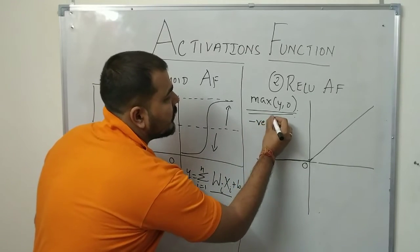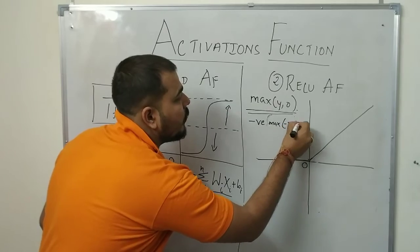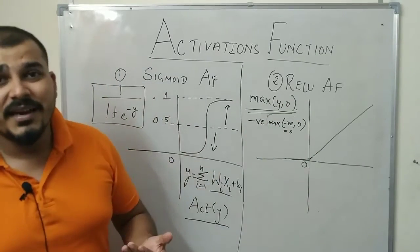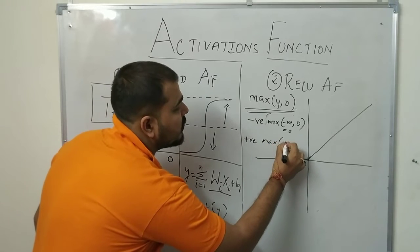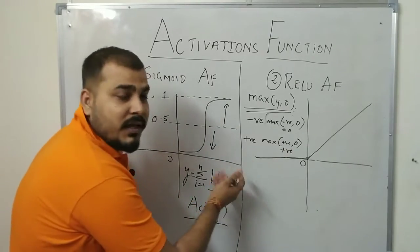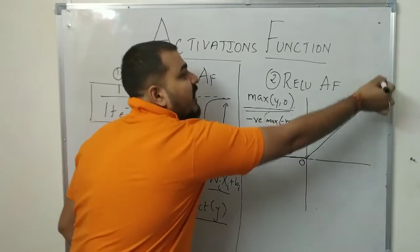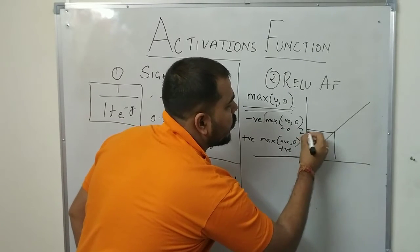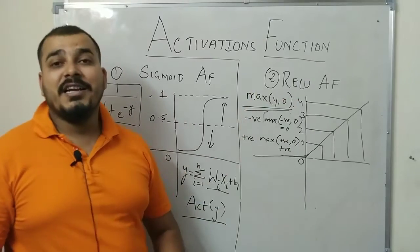Suppose if y is negative, the formula becomes max of negative comma 0. The output will always be 0 because max of a negative number and 0 is 0 — 0 is greater than a negative number. Similarly, if the output of y is positive, then max of positive comma 0 will be that positive number. So if y is negative, it gets transformed to 0. If y is positive, it gets transformed to that particular positive value — if y is 1 output is 1, if y is 2 output is 2, if y is 3 output is 3. This is the functionality of ReLU activation function.